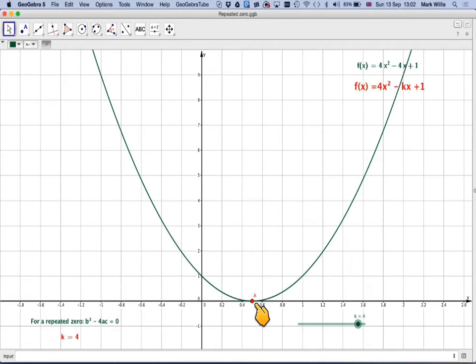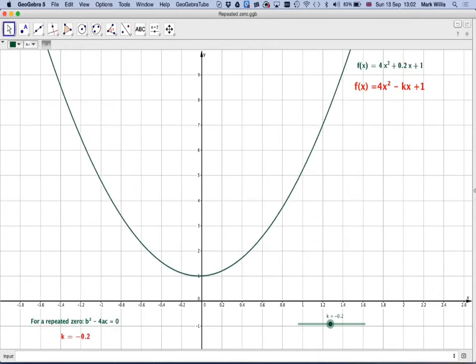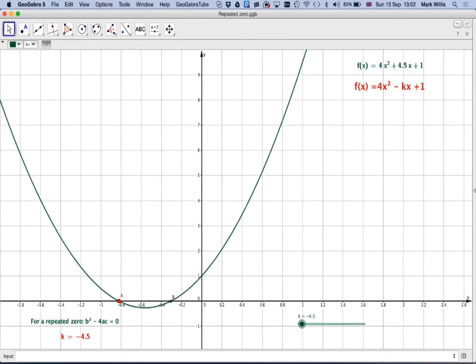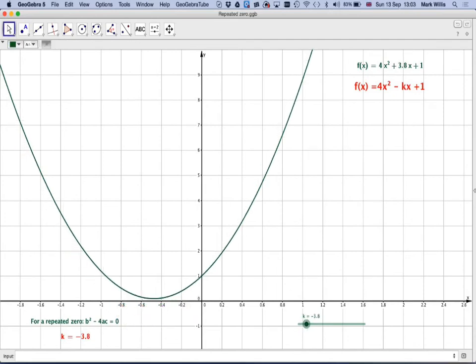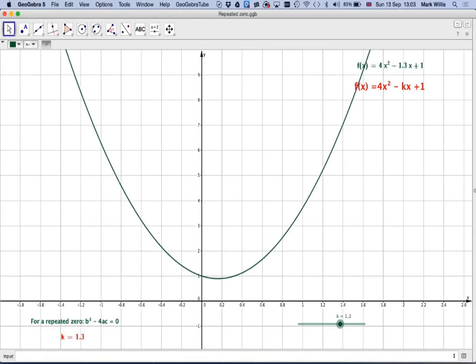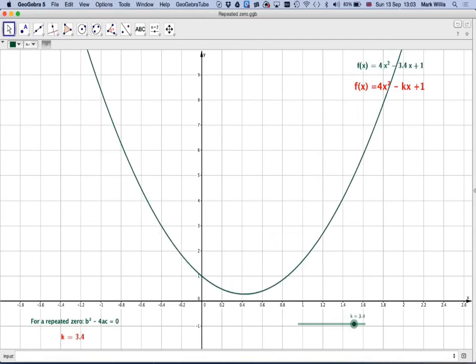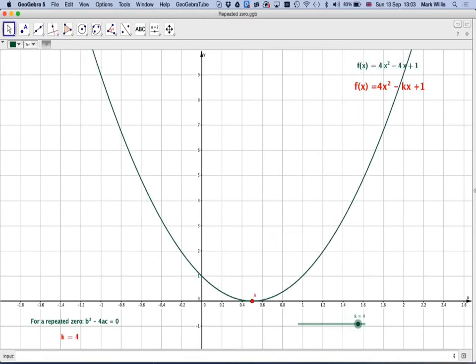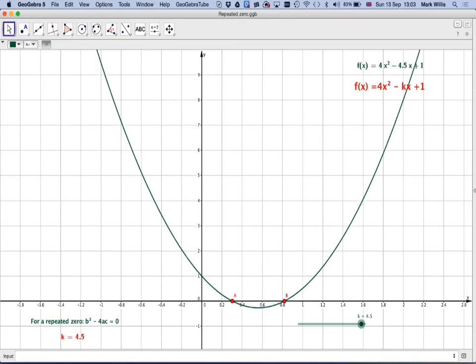It doesn't actually tell us what the root is, it just tells you the value of k where there is a root. And we can have this situation where we've got two roots here and here, and then at minus 4 we get one root, and then between minus 4 and 4 we get no roots. At 4 we get one root, and then after 4 we get two roots.